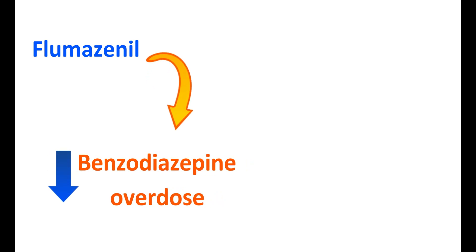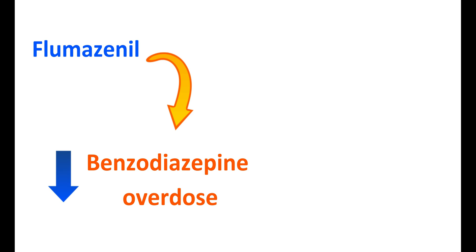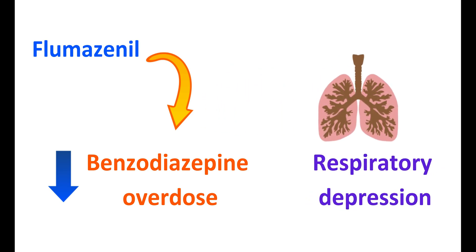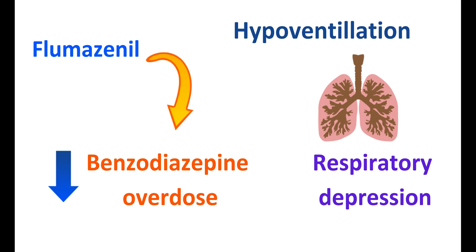An important precaution is that Flumazenil can reduce the symptoms of Benzodiazepine overdose but it cannot reverse all the symptoms. For instance, the respiratory depression produced by Benzodiazepine overdose cannot be restored by Flumazenil. So, hypoventilation may still be observed with use of Flumazenil, and in case of respiratory depression, other techniques should be used to increase respiratory function.